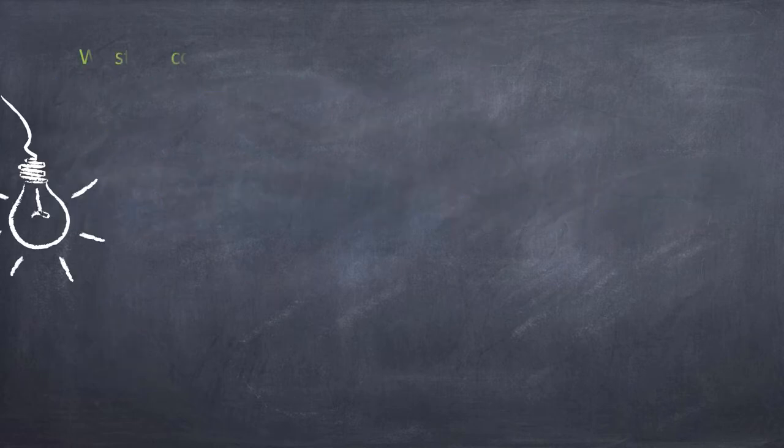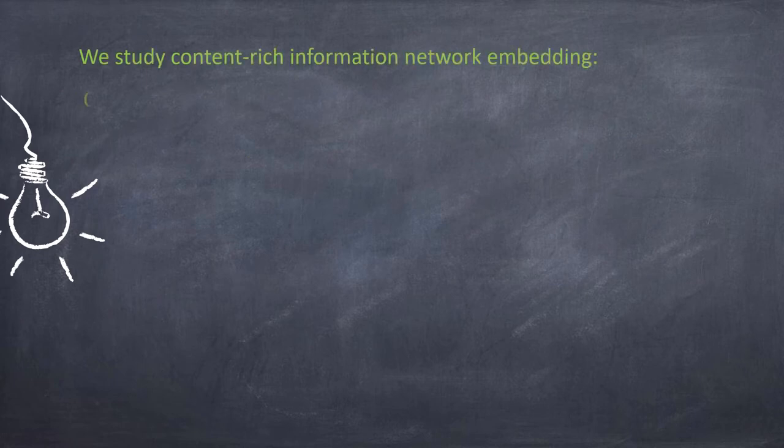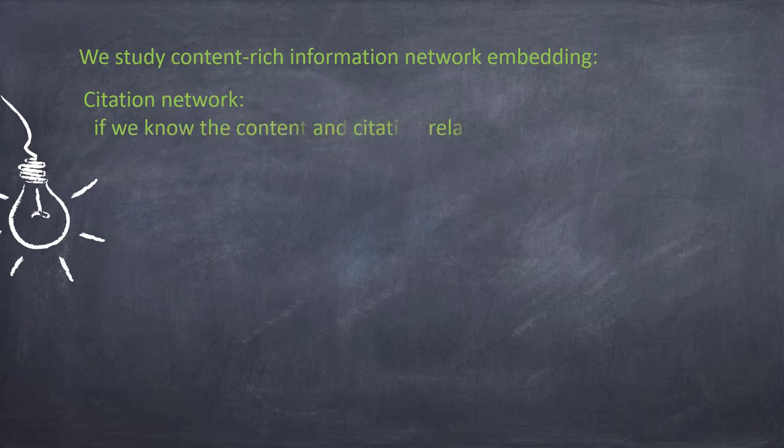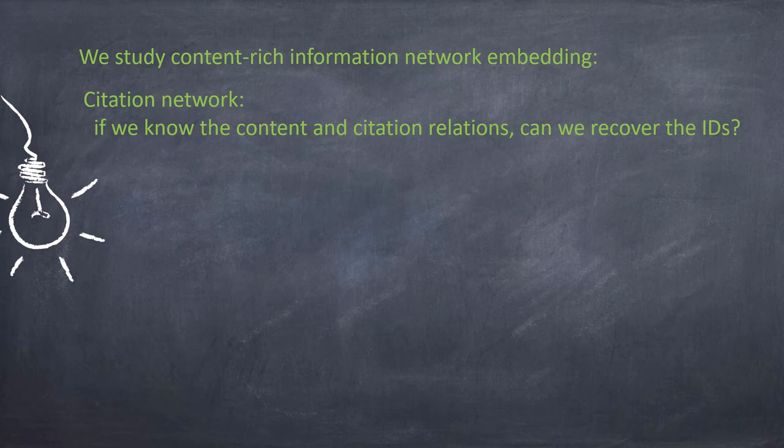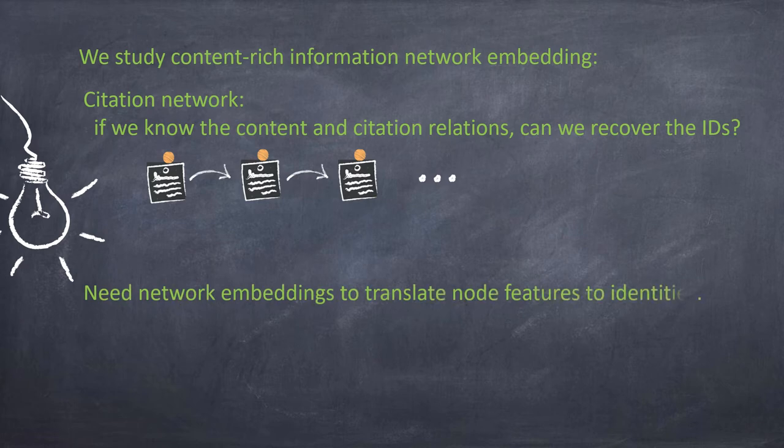In this paper, we study content-rich information network embedding. Take the citation network as an example. If we know the content and citation relations between some research papers, can we infer the paper IDs? Therefore, we need network embeddings that facilitate the translation from node features to node identities.